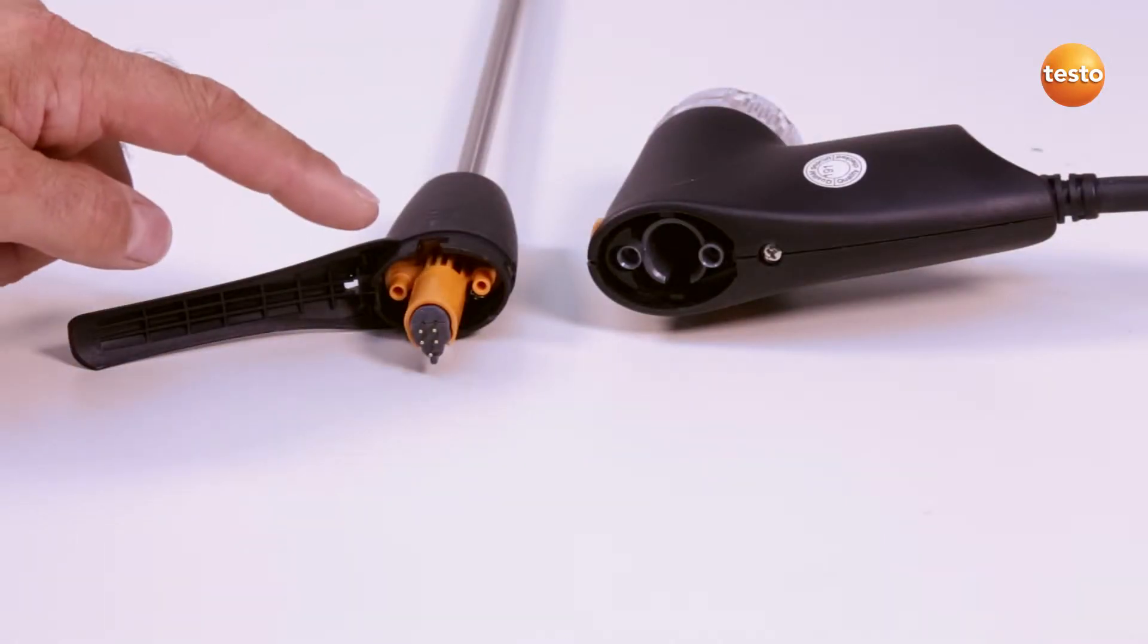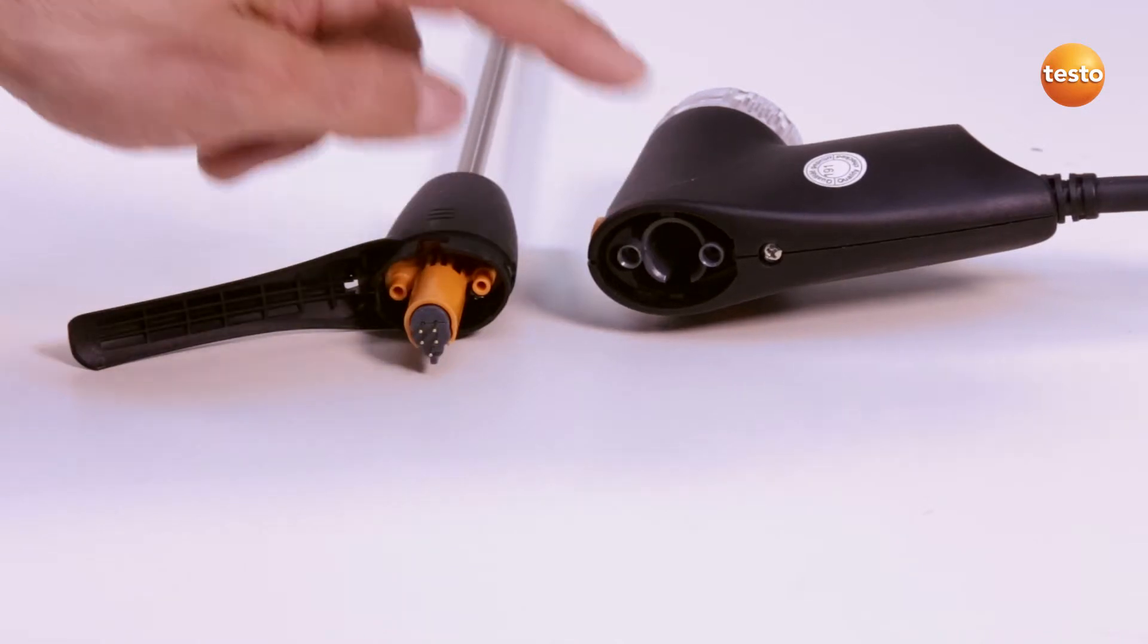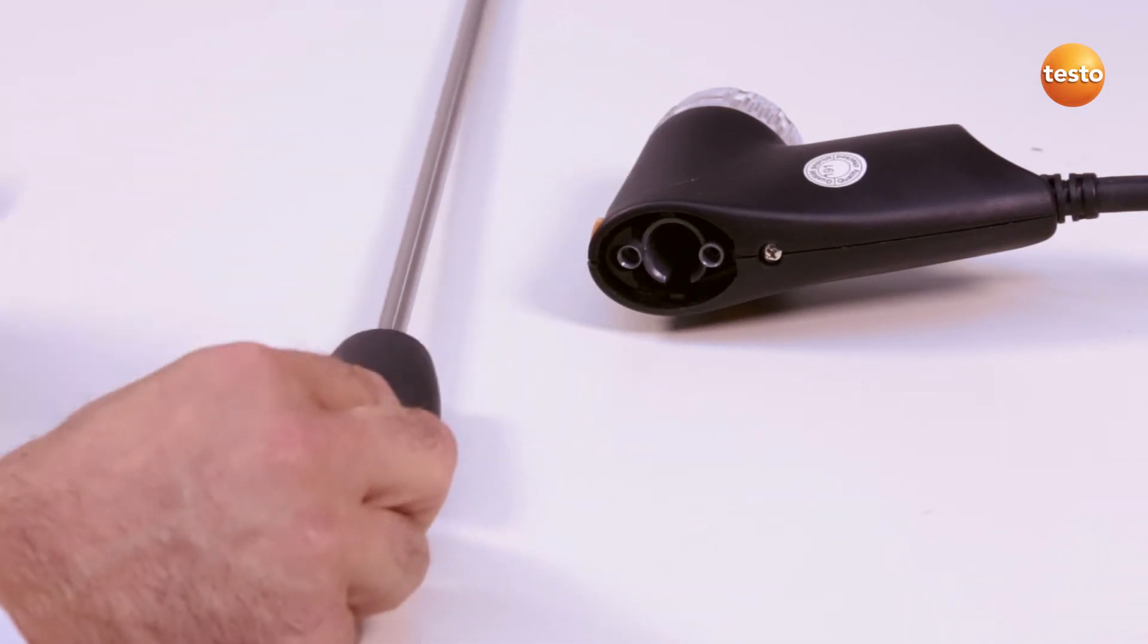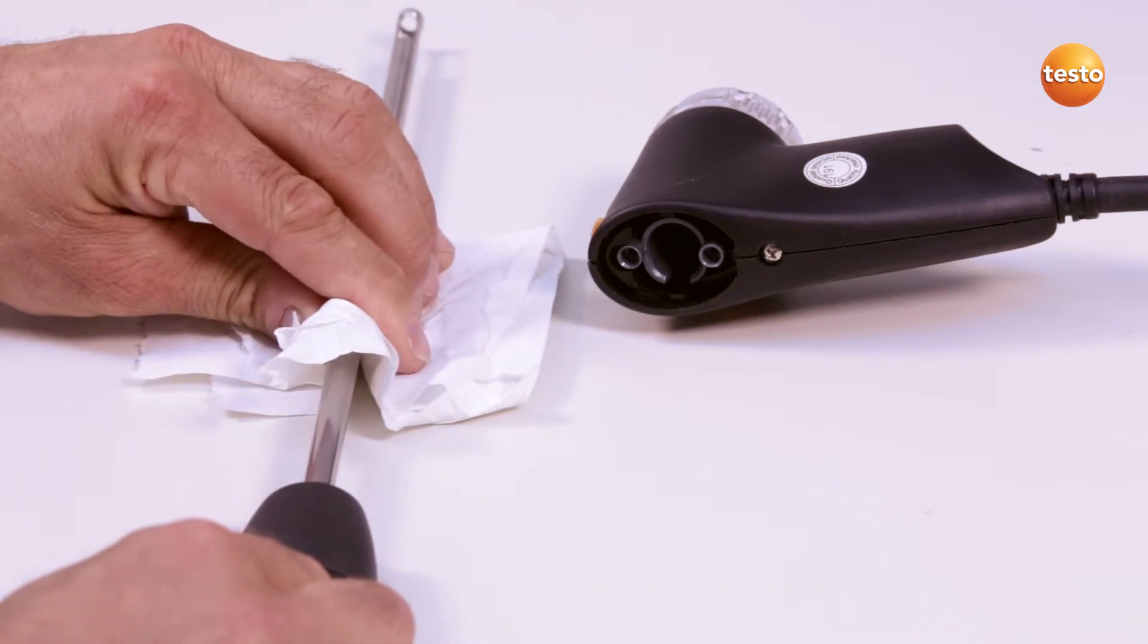The flue gas ducts in the probe shaft and the probe handle can be cleaned out using compressed air. External cleaning is done with a cloth. Brushes should not be used.